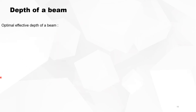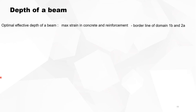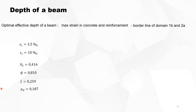The optimal effective depth of a beam is where the maximum strain in concrete and reinforcement is reached simultaneously — meaning we are on the borderline of domain 1B and 2A. The strain in the concrete is 3.5‰ and in the steel 10‰, for concrete quality smaller than C50. In domain 2A, the delta G (location of the compressive force) and Psi (filling coefficient) are fixed, and the location of the neutral axis is also fixed, giving µD = 0.187.